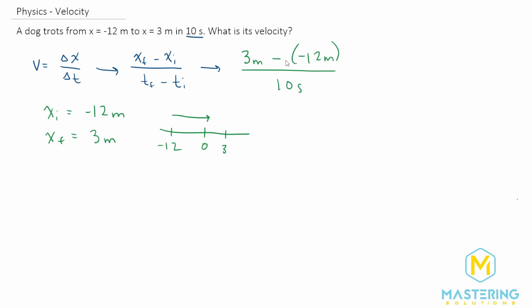And of course, any time we subtract a negative, it's the same thing as adding. So now we have 15 meters divided by 10 seconds.